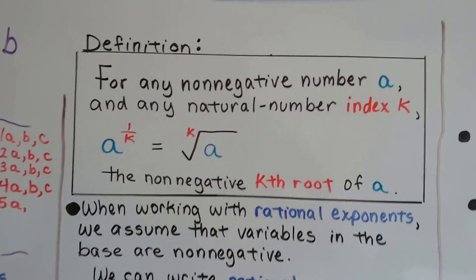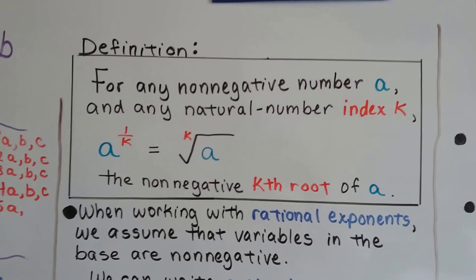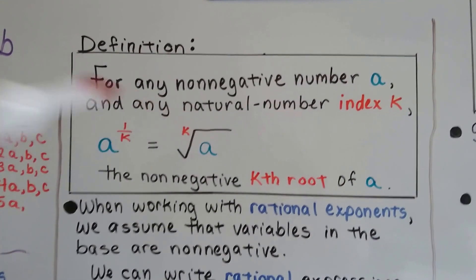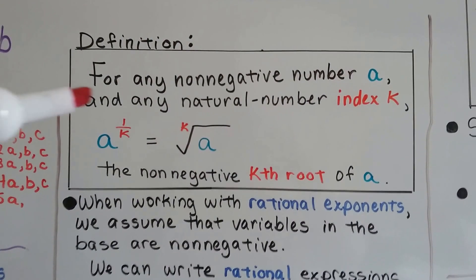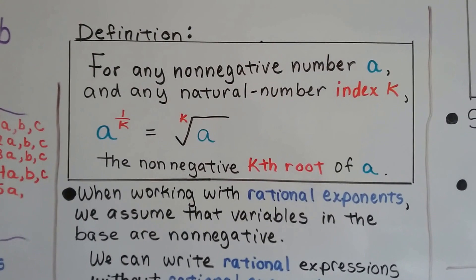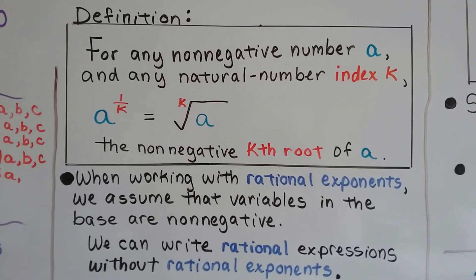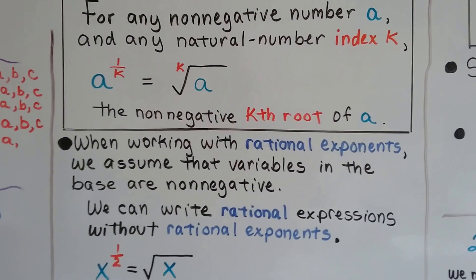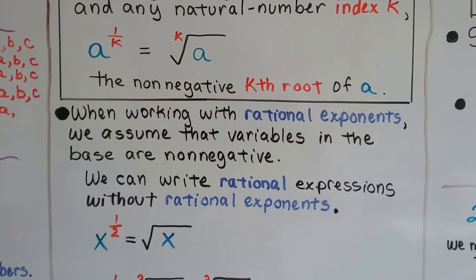Here's a definition for any non-negative number a and any rational number index k. a to the one-kth power is going to equal the kth root of a, the non-negative kth root of a. When working with rational exponents, we assume that variables in the base are non-negative.